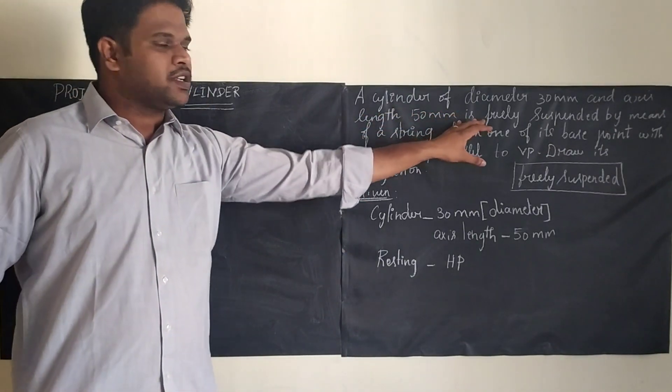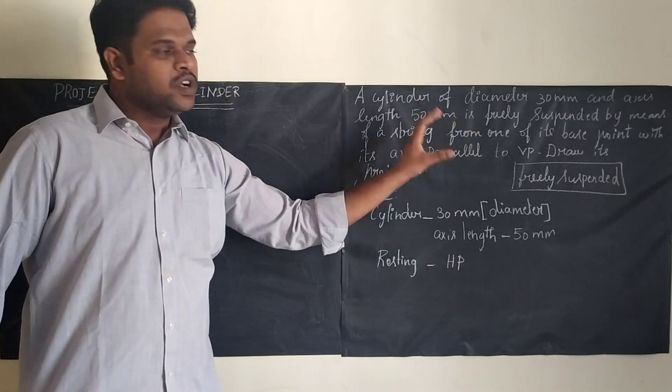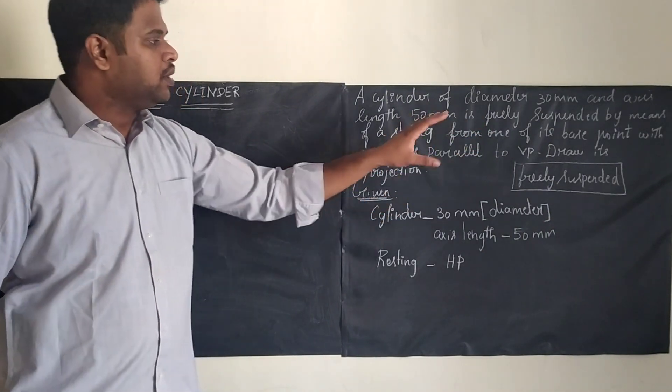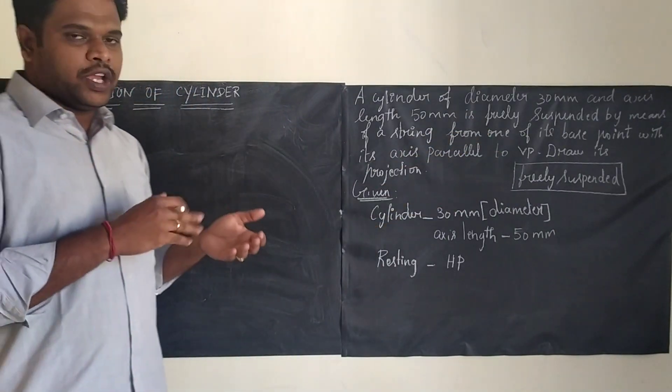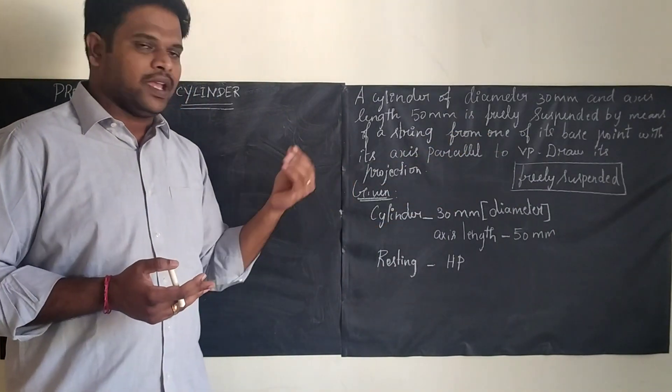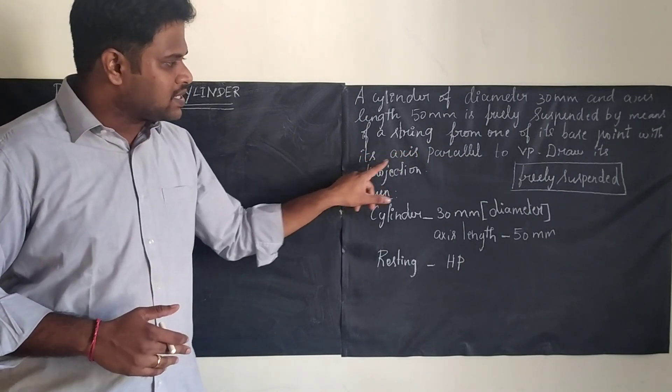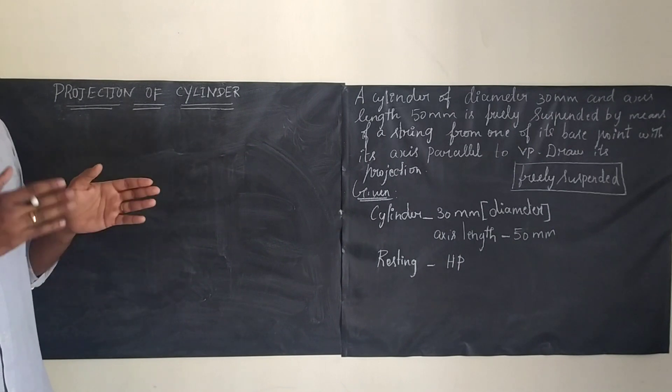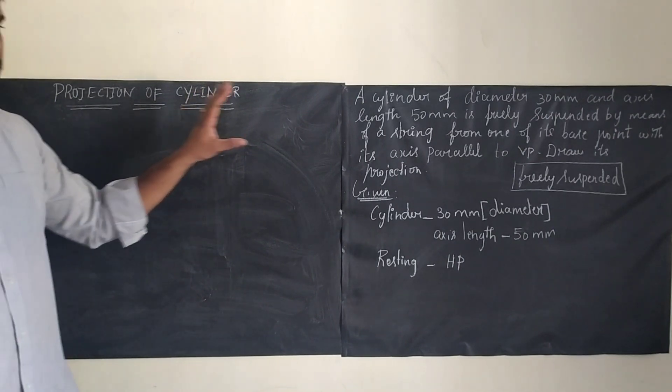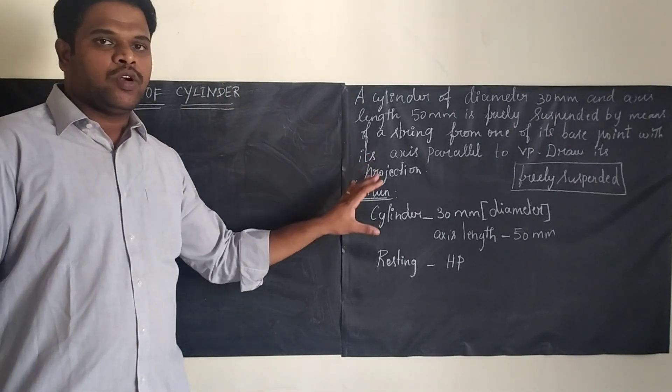It is freely suspended. So this sum comes under the category of freely suspended string sum, by means of a string from one of its base point. So the circle will be drawn, dividing into 8 parts. We can give any one point as a base point with its axis parallel to VP. The axis is parallel to VP means it is always inclined to HP.